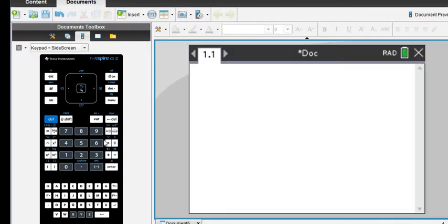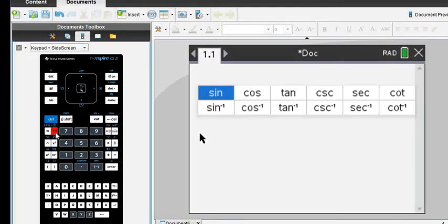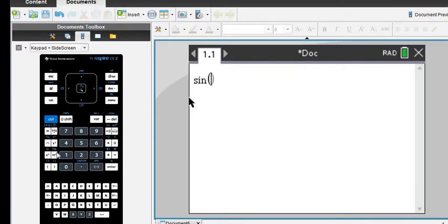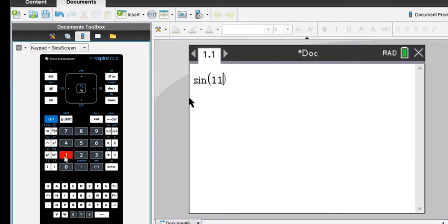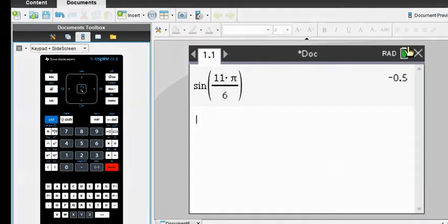I'm going to put all of them in. The first one we had was sine 11π over 6. You're going to hit the trig button, which is next to the 7. Hit the trig button, select the one you want - we want sine - and then we would do 11, and our pi button is down here next to the H. So we would do 11π divided by 6, and then just hit enter, and it will give you the answer negative 0.5.